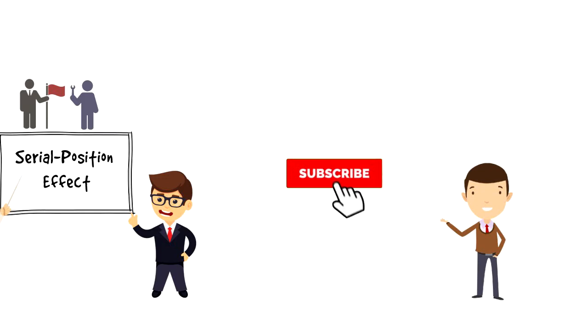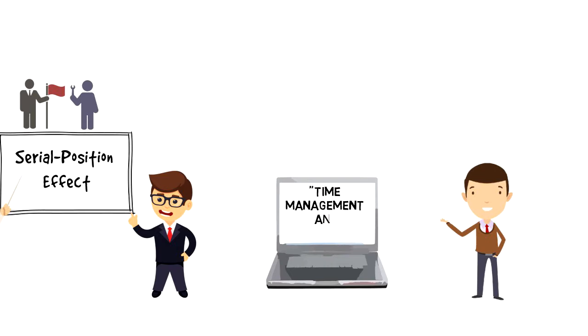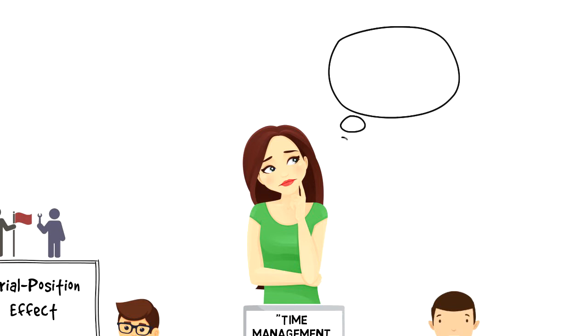If this is your first time on this channel, then make sure you subscribe and hit the bell icon to get updates on my latest videos about time management and productivity. Serial Position Effect is the tendency of a person to recall the first and last items in a series best, and the middle items worst.